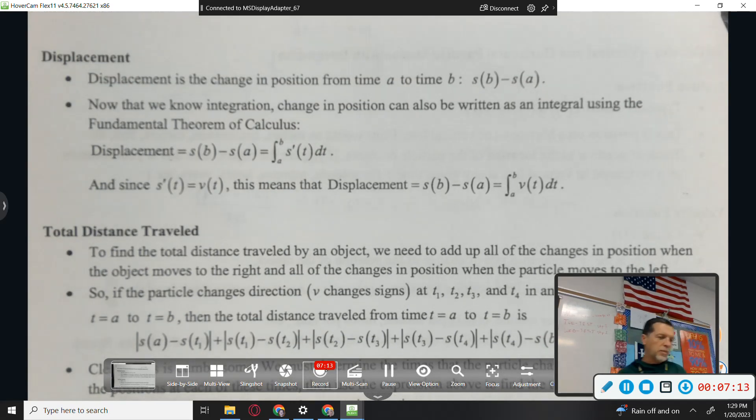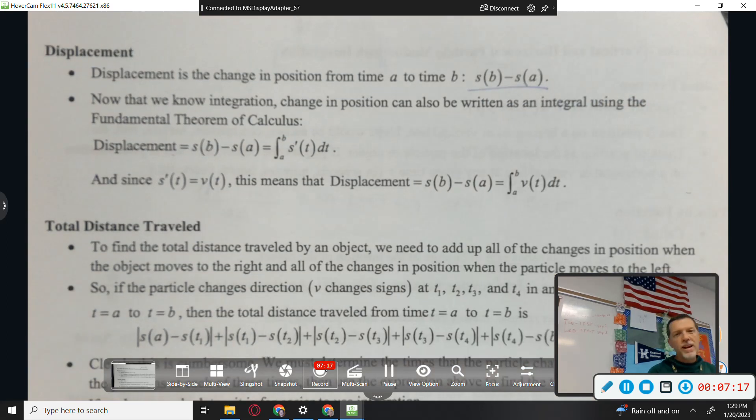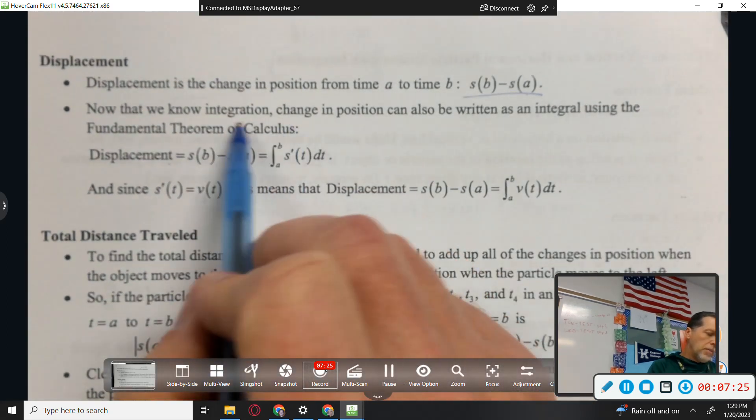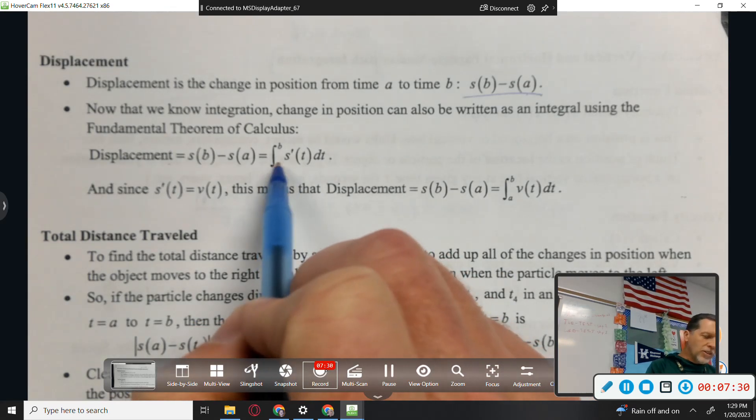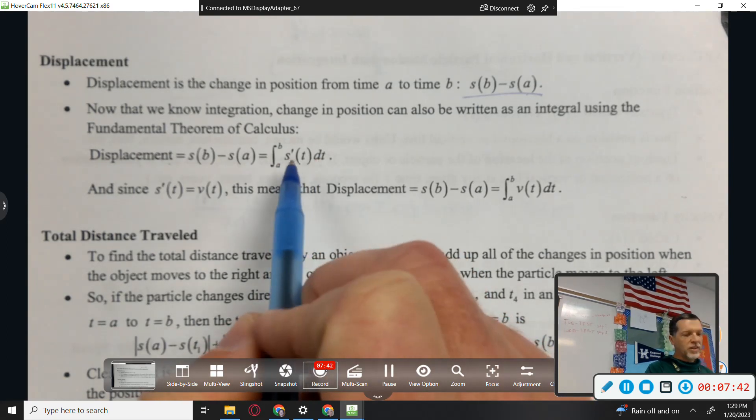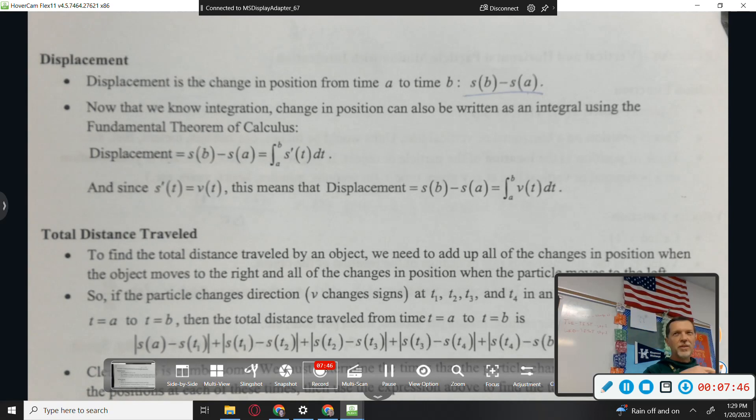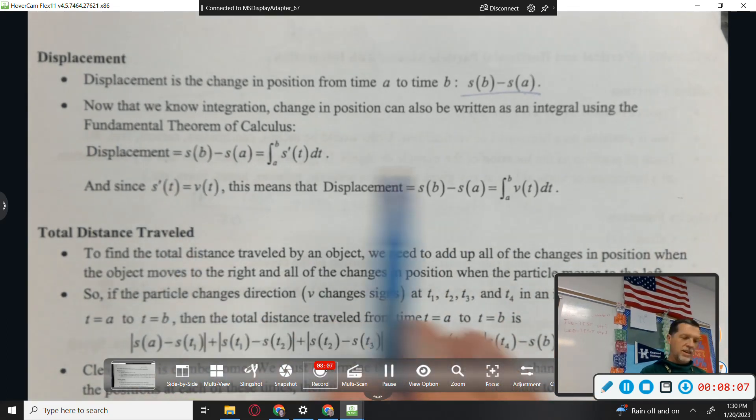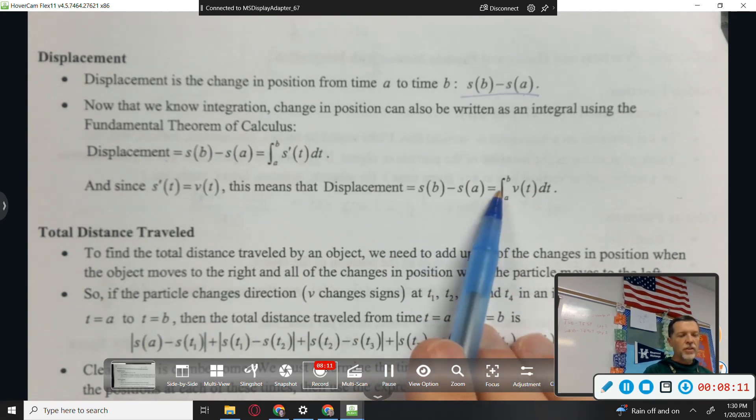Displacement. Change in position from time A to time B. That's an algebra problem right there. Displacement. Where were you at time B minus where you were at time A? But integration, if you integrate S prime, you get back to S, regular S, the antiderivative of the derivative. By the way, this was the bonus, sort of. The bonus wasn't the antiderivative of the derivative. It was the derivative of the antiderivative. It's kind of the same thing. Just don't forget to chain rule. And since S prime is the same as V, you could write it like this. So that looks funny maybe, but the antiderivative of velocity is position.